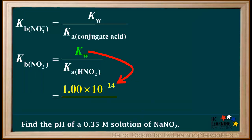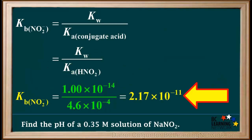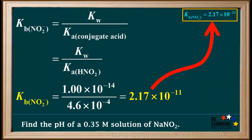Now we can substitute. We know that Kw is 1 times 10 to the negative 14th, and the Ka of HNO2 is 4.6 times 10 to the negative 4th. 1 times 10 to the negative 14th divided by 4.6 times 10 to the negative 4th comes out to 2.17 times 10 to the negative 11th. Even though the Ka we used had only two significant figures, we'll express the Kb to three significant figures and round to two significant figures in the final answer.